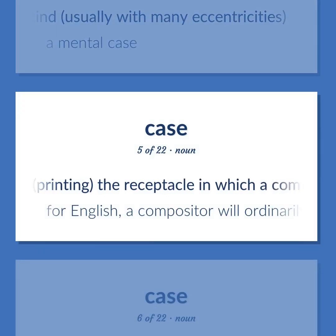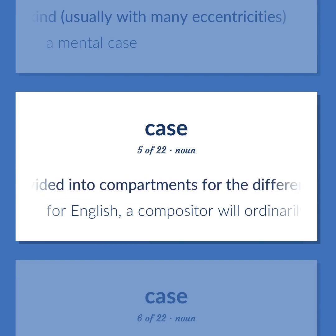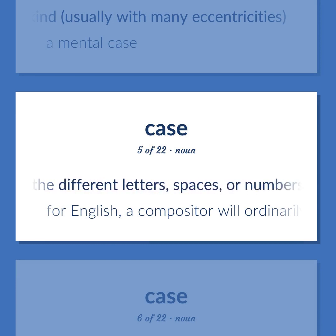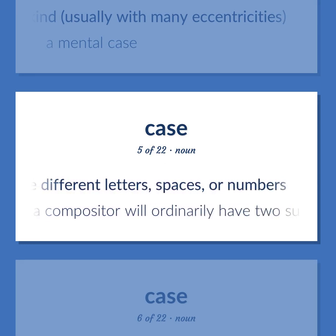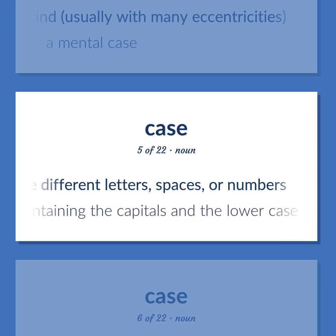Printing: The receptacle in which a compositor has his type, which is divided into compartments for the different letters, spaces, or numbers. For English, a compositor will ordinarily have two such cases: the uppercase containing the capitals and the lowercase containing the small letters.